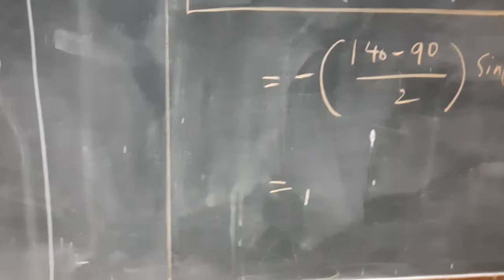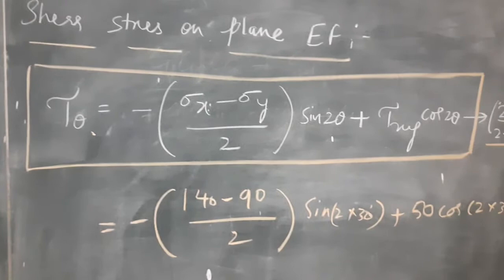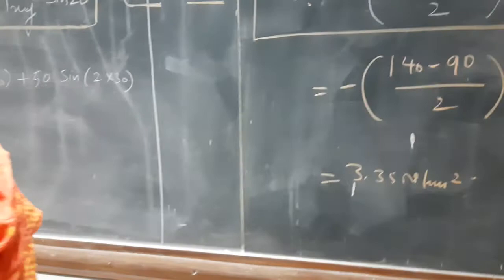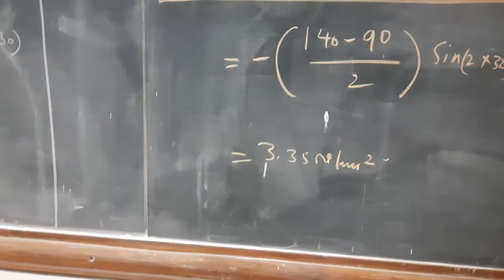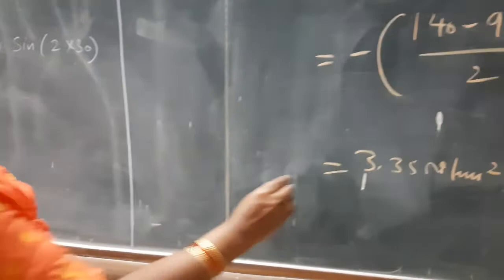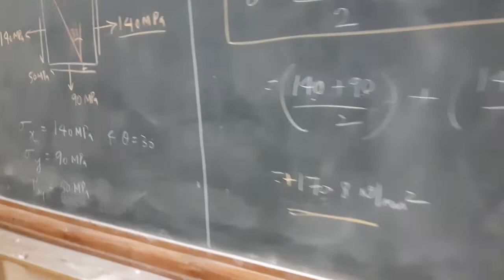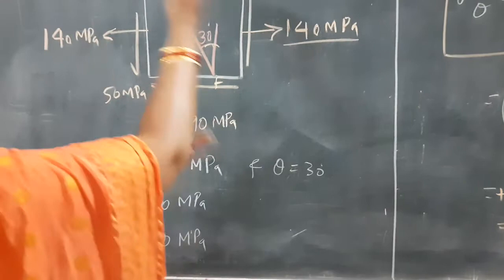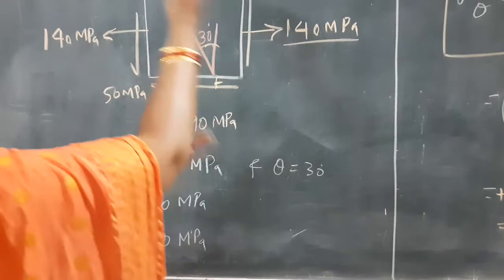The final answer for shear stress is 3.35 Newton per mm squared. Check whether it is positive or negative. Here both the normal stress and shear stress come out positive. The positive sign indicates the stresses are going to produce counterclockwise rotation. This is how you find the normal stress and shear stress on an inclined plane.